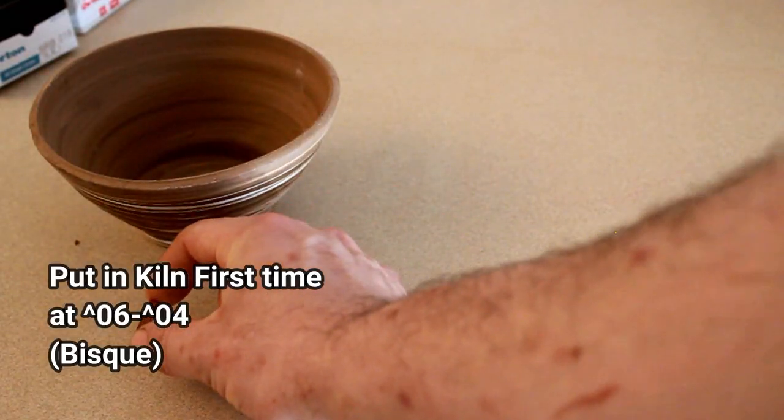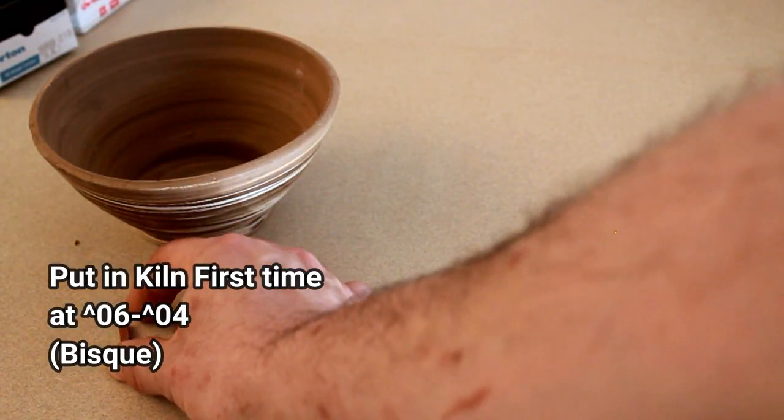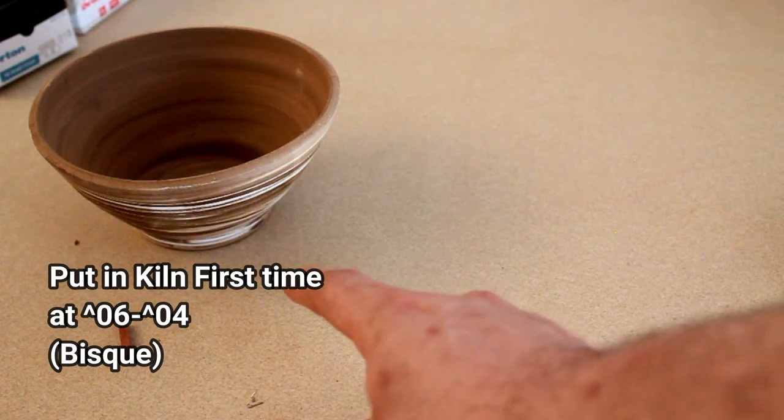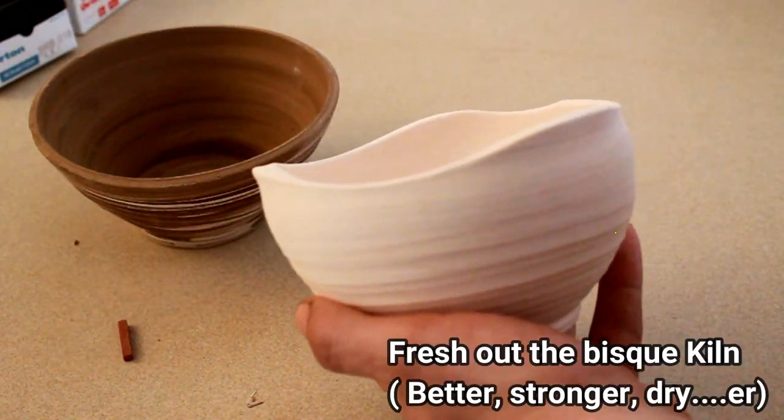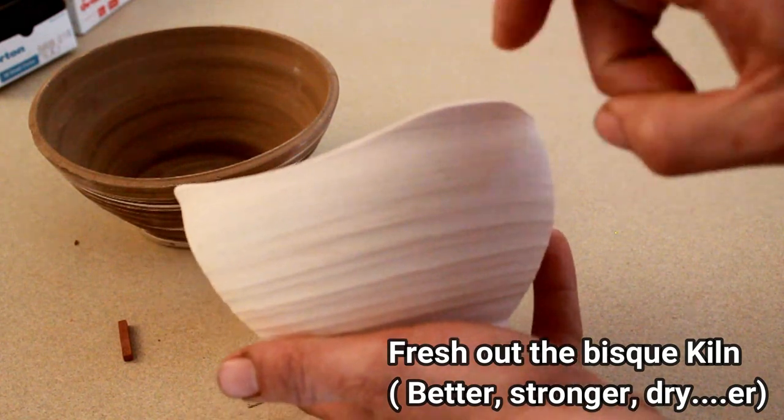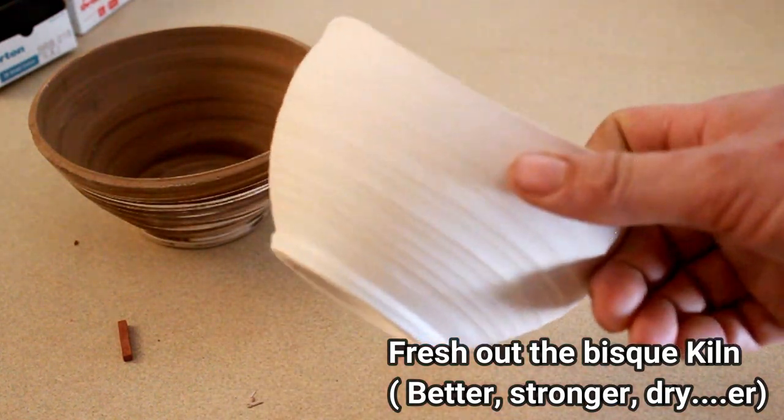Then you're going to put it in the kiln at 06, 05, or 04. And that's considered the bisque scale. After it comes out of the kiln one time, this is now considered bisque. It's a lot harder now. But more importantly, the pores are open.